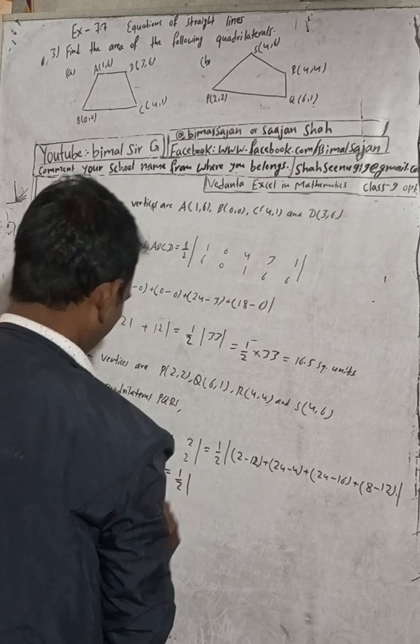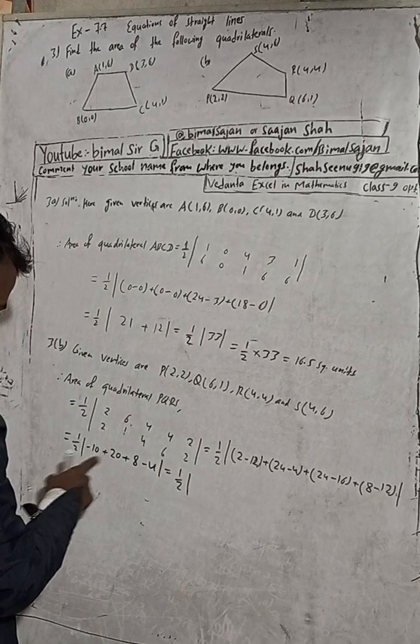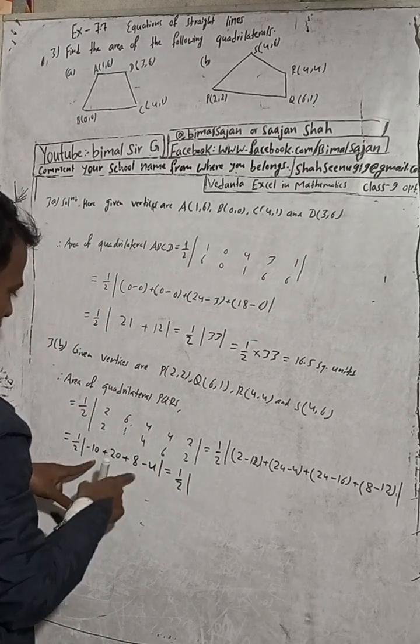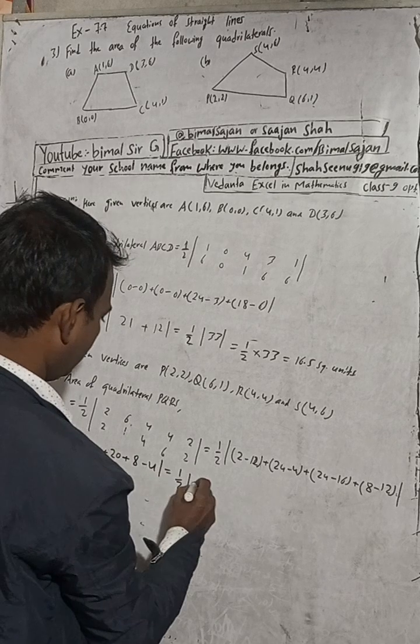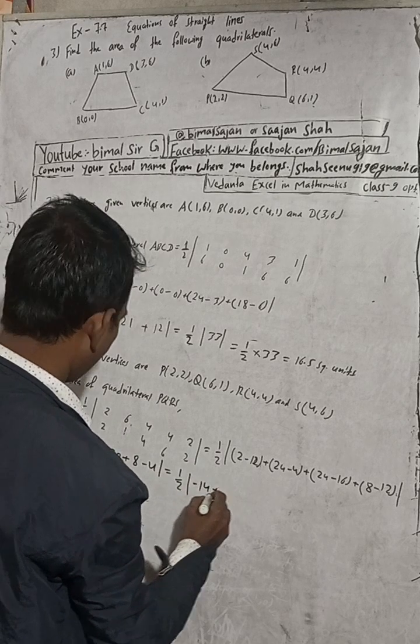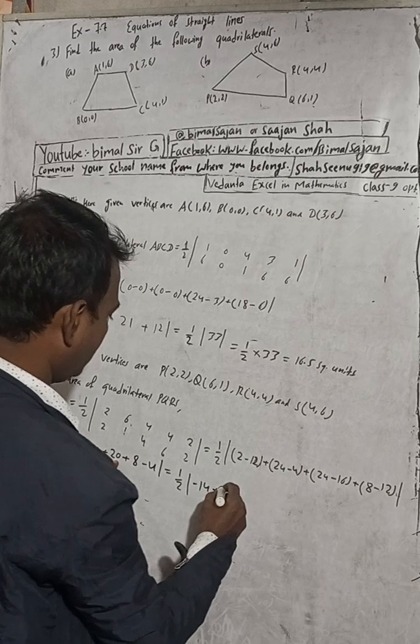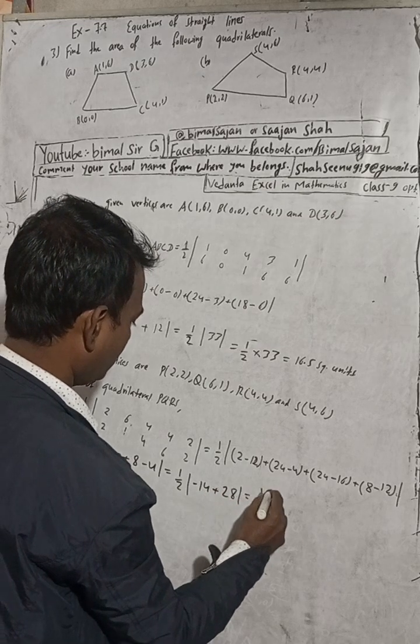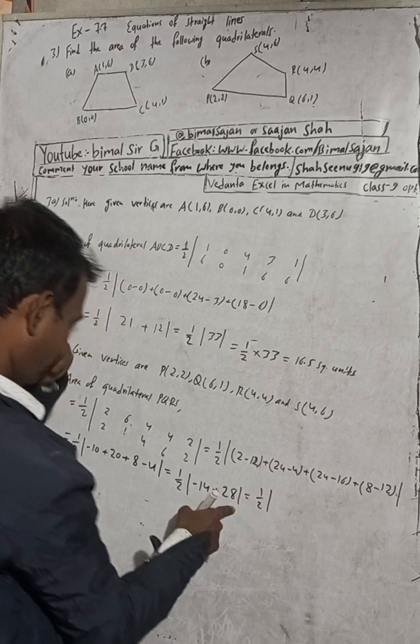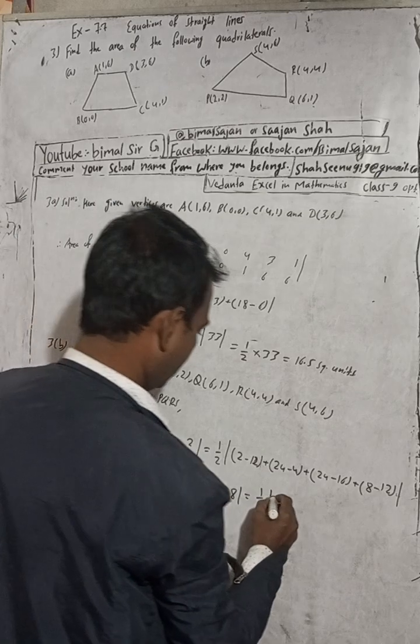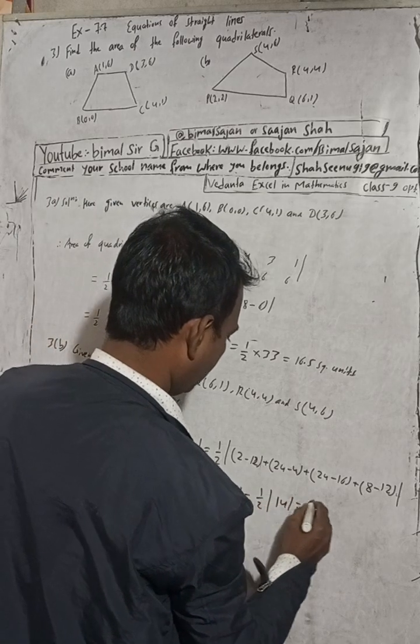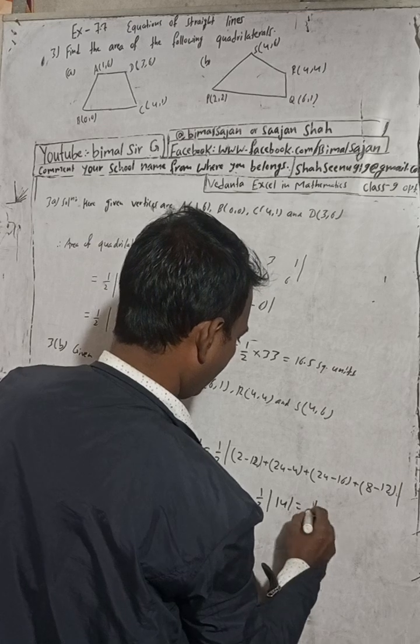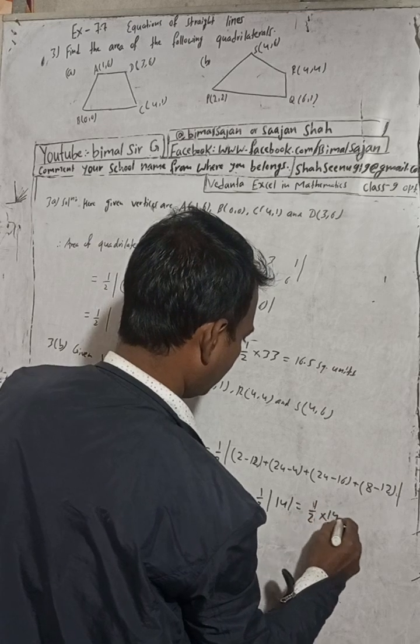Now 1 by 2, this and this is minus, so add these two: minus 10 minus 4 is minus 14. And plus these two, add this 28. Plus 28, so 1 by 2, this 28 plus 28 minus 14 is plus 14. So this will be 1 by 2 into 14 is equal to 7.